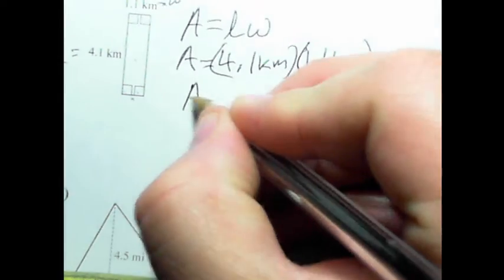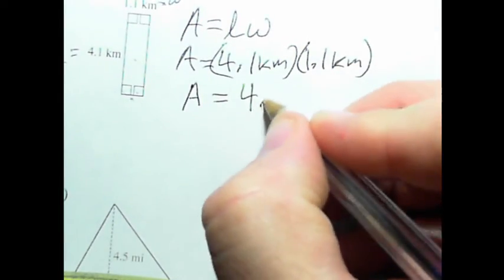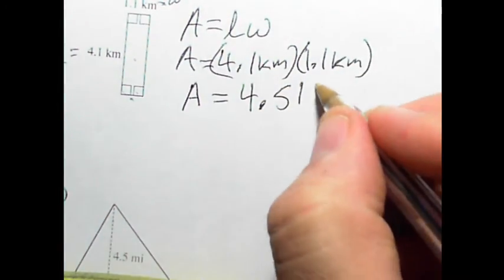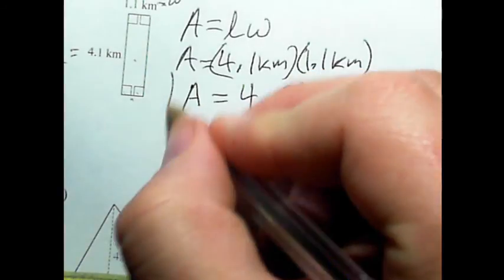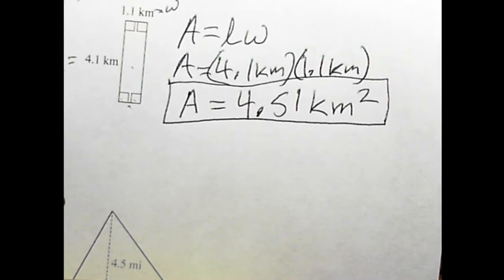So this is going to be equal to 4.51. Kilometers times kilometers is kilometers squared. So the area of that rectangle is 4.51 kilometers squared.